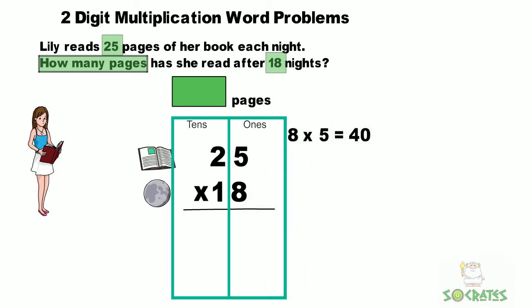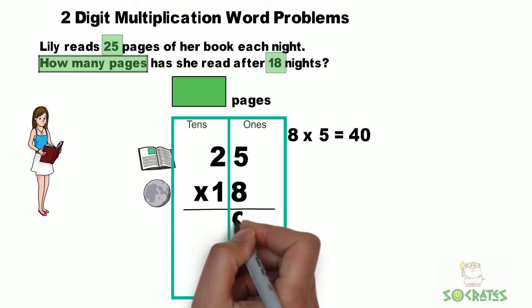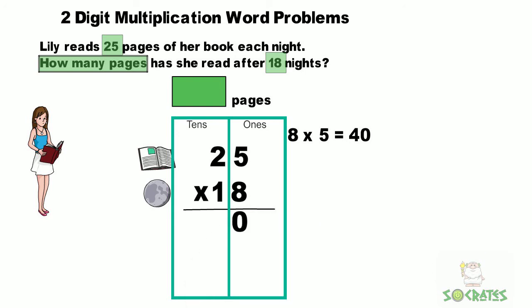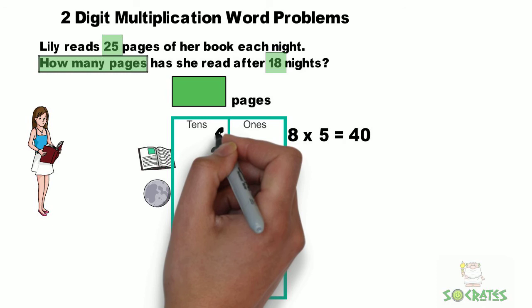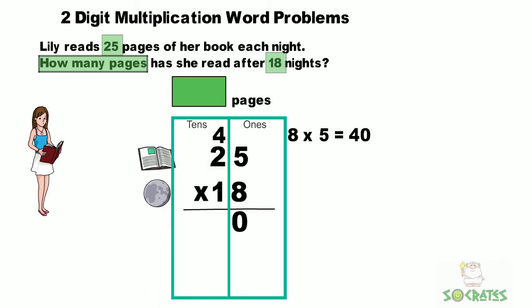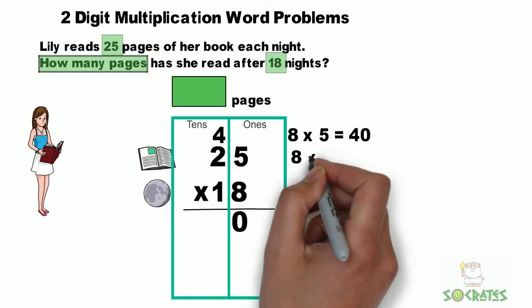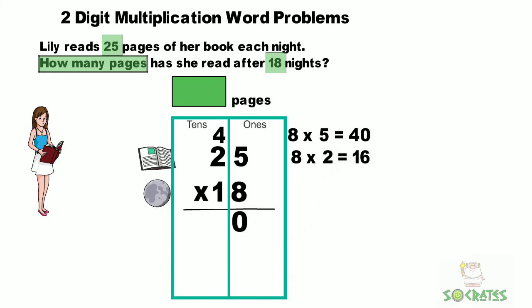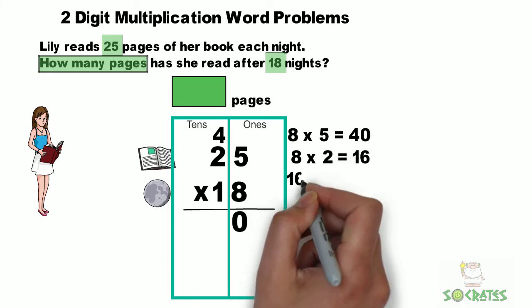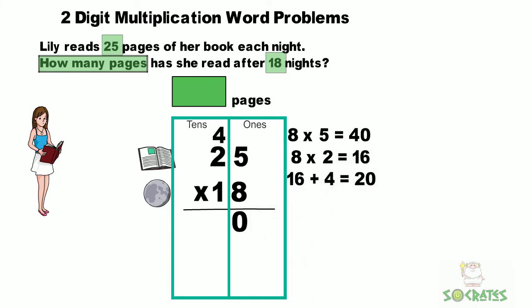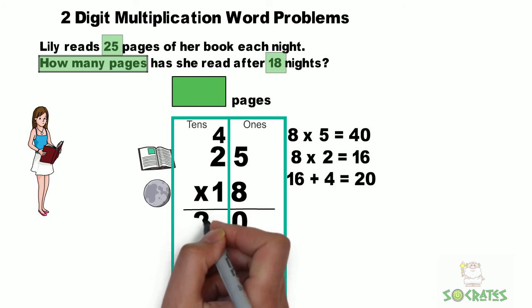We'll start with 8 times 5. That equals 40. We put a zero in the ones place and we carry the four tens above the two. Next, we multiply 8 times 2 and we get 16. And then we add the four tens to the 16 for 20, and we write down 20.